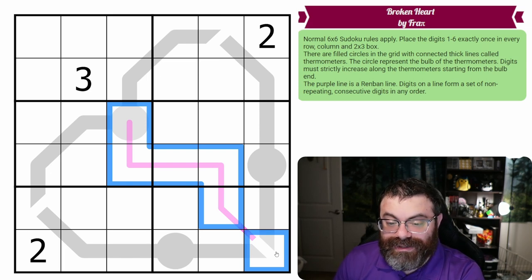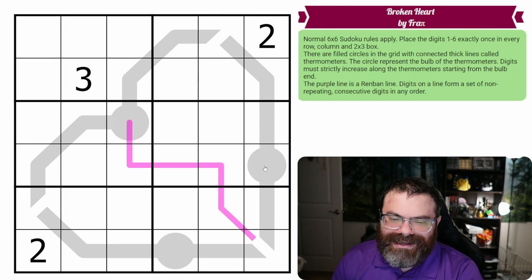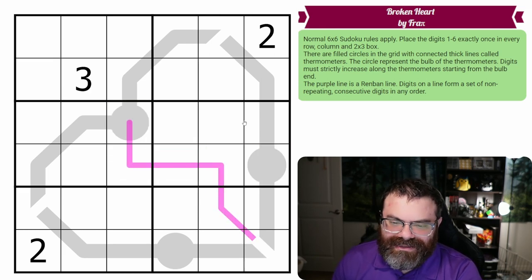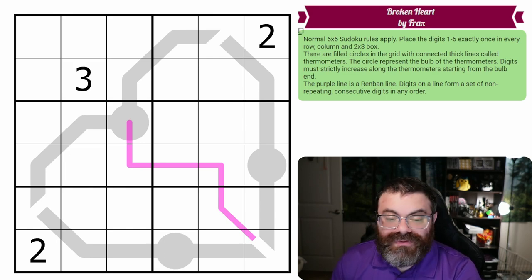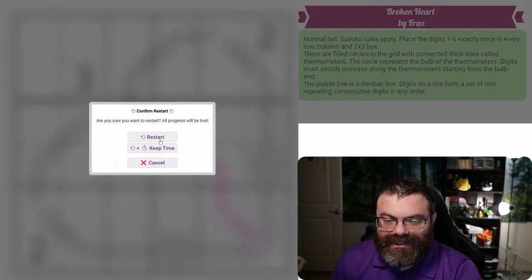I can tell you that it is a six-long Renban, so we are going to be putting all of the digits onto it exactly once. So it ends up being kind of like an extra region line when it's the same length as the number of digits in the puzzle. So those are the rules. There's a link in the description if you'd like to try the puzzle yourself, and I'm going to get started right now.